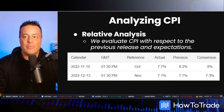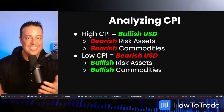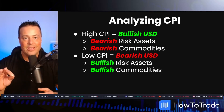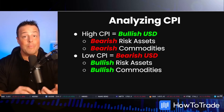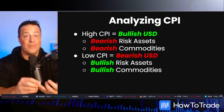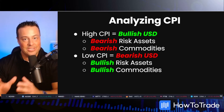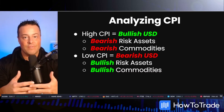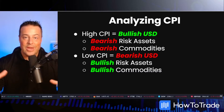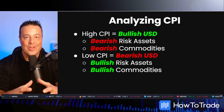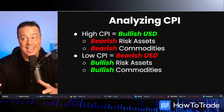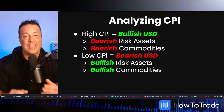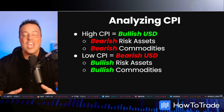When we analyze CPI with our relative analysis, there are a couple different ways that the number can go. A high CPI reading, which would be one that comes in well above expectations and well above the previous release, is going to lead to a bullish USD. When we have runaway inflation, central banks get involved, they raise interest rates, they try to reduce that money supply. And in doing so, they put pressure on things like risk assets and commodities. So a high CPI is a bullish US dollar, which leads to bearish risk asset pricing and bearish commodity pricing.